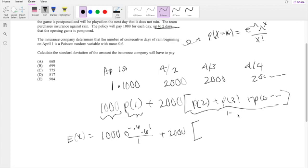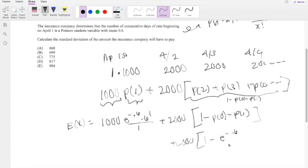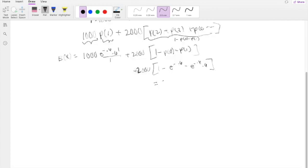It's basically everything but the probability of 0 and probability of 1. So it's going to be 1 minus probability of 0 minus probability of 1, which is equal to 2,000 times 1 minus 0.6 to the 0 divided by 0 factorial minus e to the negative 0.6 times 0.6, which equals 573.089.